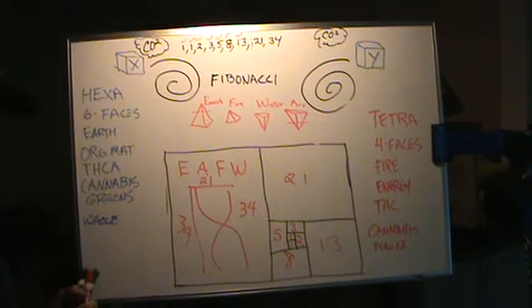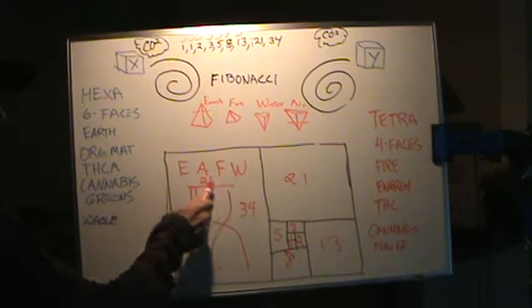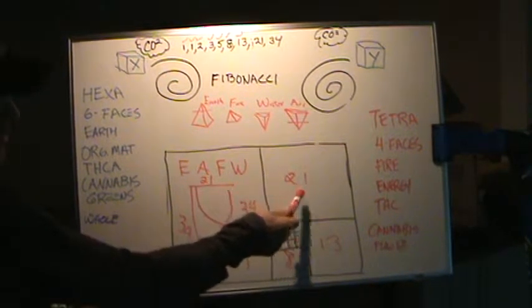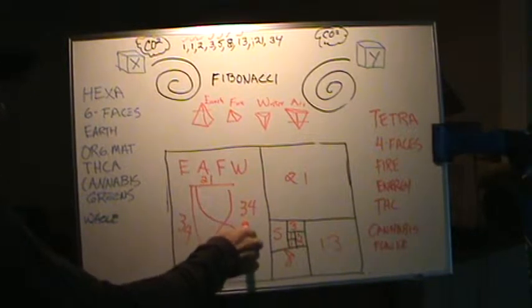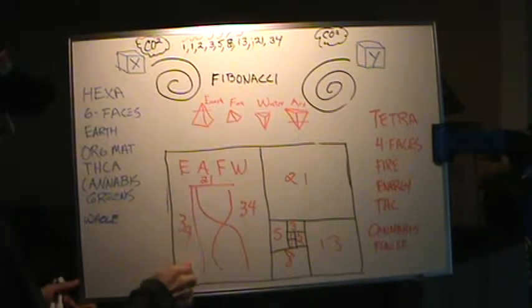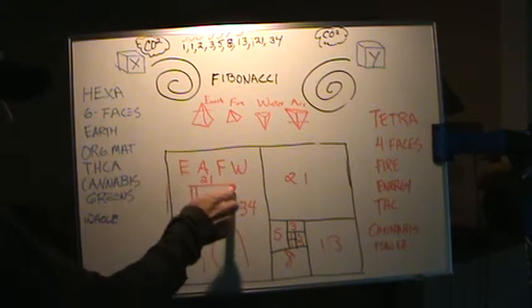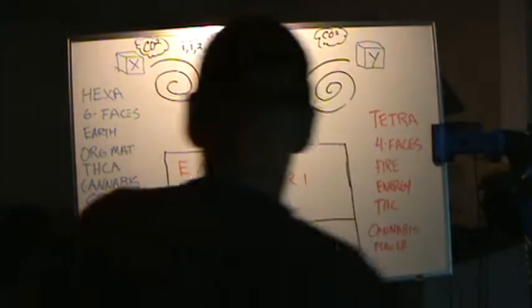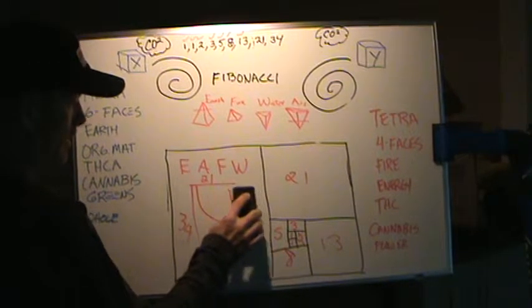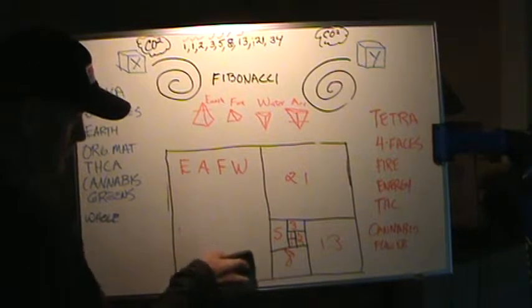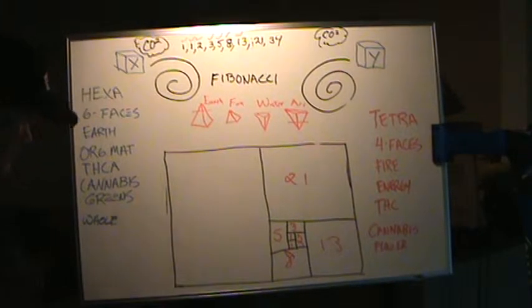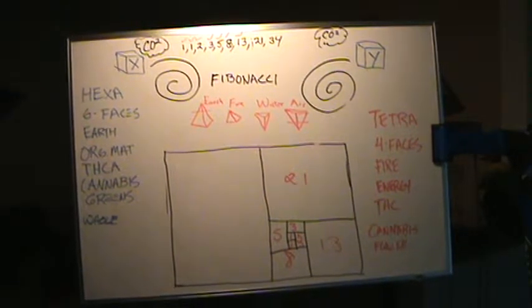21 gets us to the width, and then 21 plus 13 gets us to 34. That's the width and height of one ladder step of human DNA.